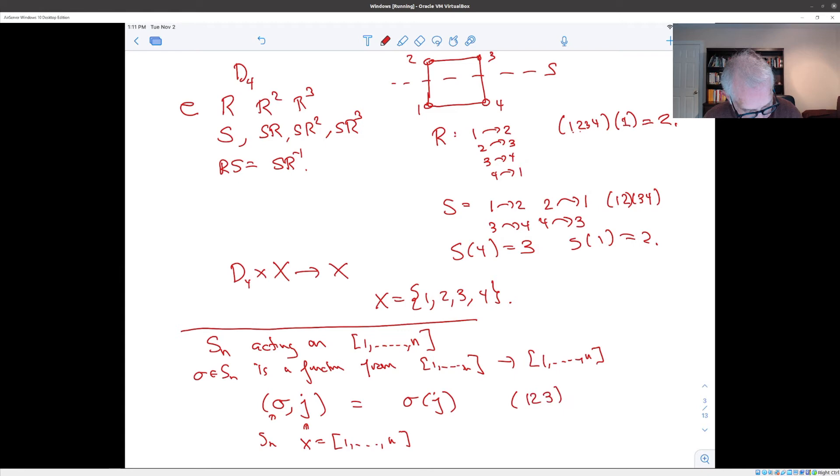in the case of the 3 cycle (1, 2, 3) in S_5, for example, sigma of 1 is 2, sigma of 2 is 3, sigma of 3 is 1, and sigma of everything else is itself. So the dihedral group action is a special case of that.